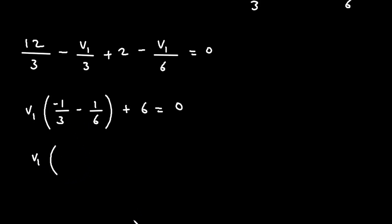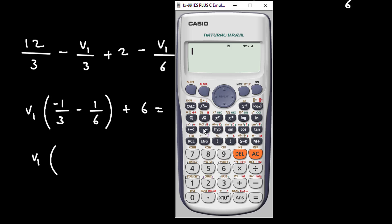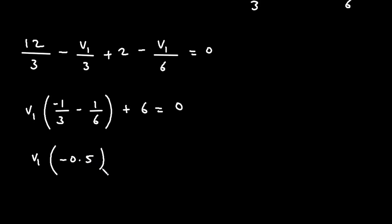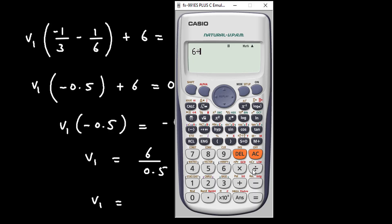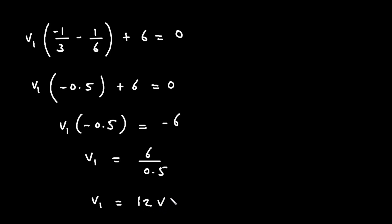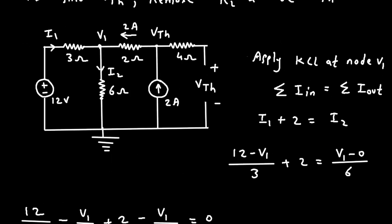We can take V1 common: V1 times (minus 1/3 minus 1/6) plus 4 plus 2 equals 0. So V1 times (minus 1/3 minus 1/6) equals minus 1/2, or minus 0.5. And 4 plus 2 is 6, so V1 times minus 0.5 plus 6 equals 0. Therefore V1 times minus 0.5 is equal to minus 6, so V1 is equal to 6 divided by 0.5, which is equal to 12 volt.